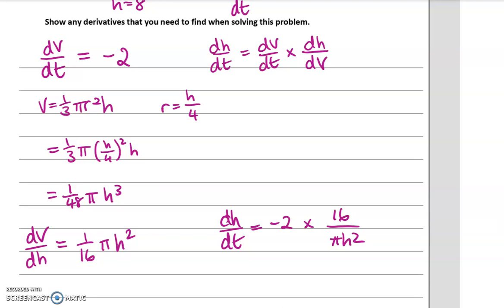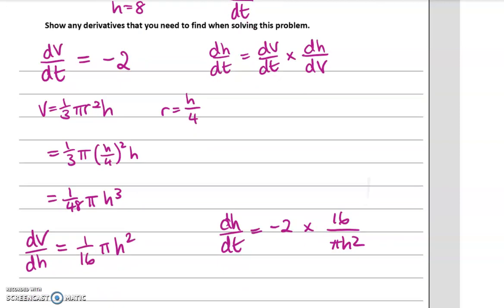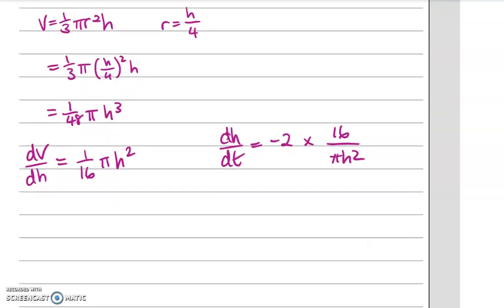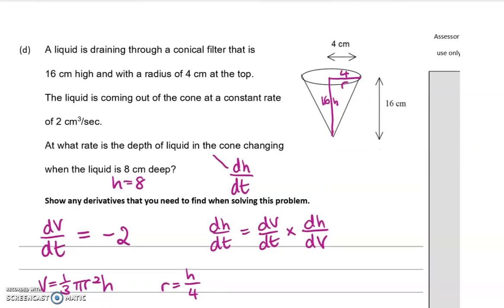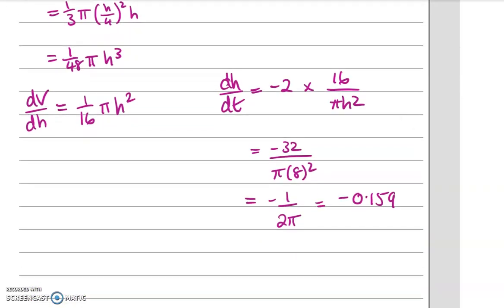And remember, back in the question, we were doing it when the height is 8, so we substitute that in now. So we get -2 times 16 over π times 8², and that comes to negative 1 over 2π, or minus 0.159. And we'll just check on the units. So our height is decreasing at a rate of 0.159 centimeters per second.